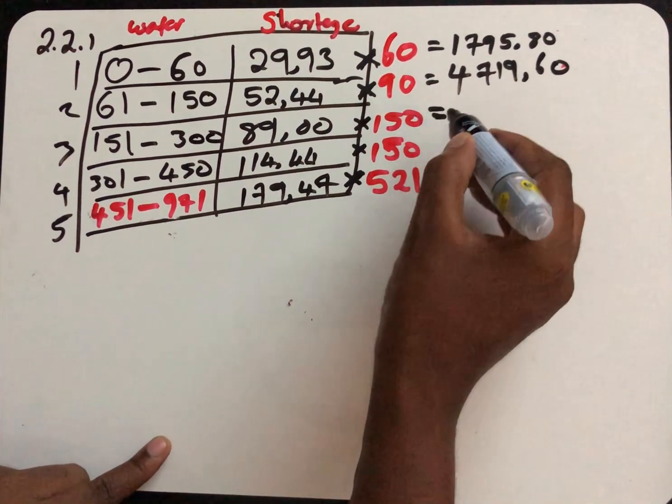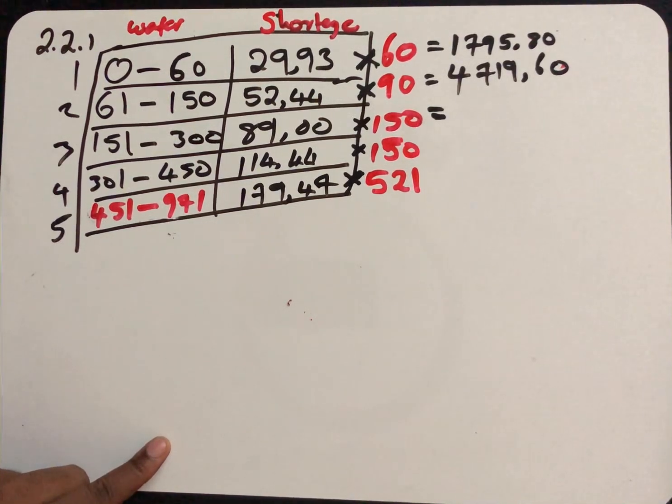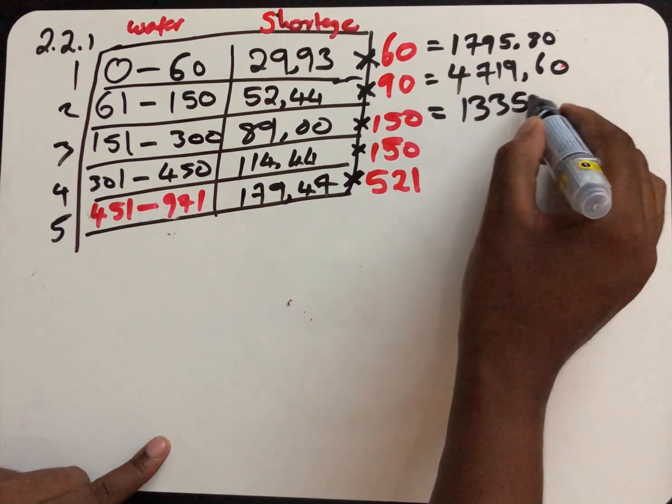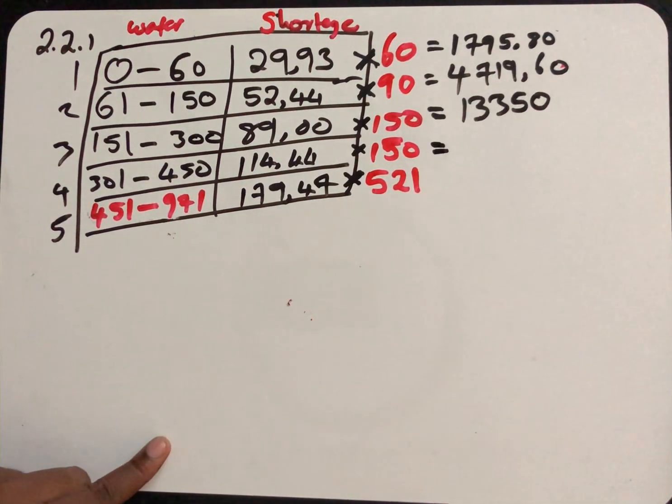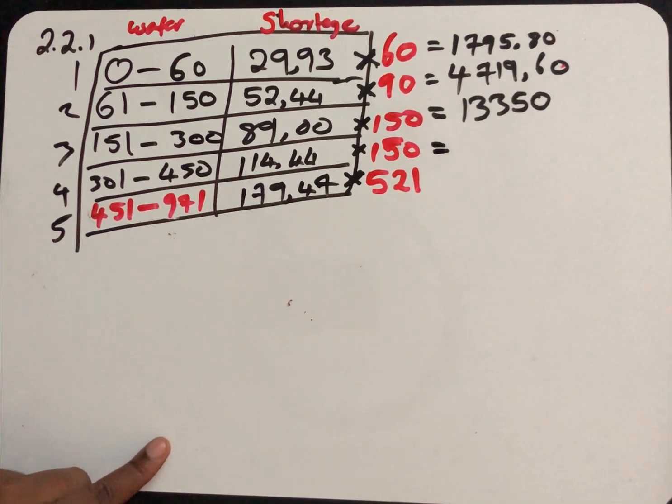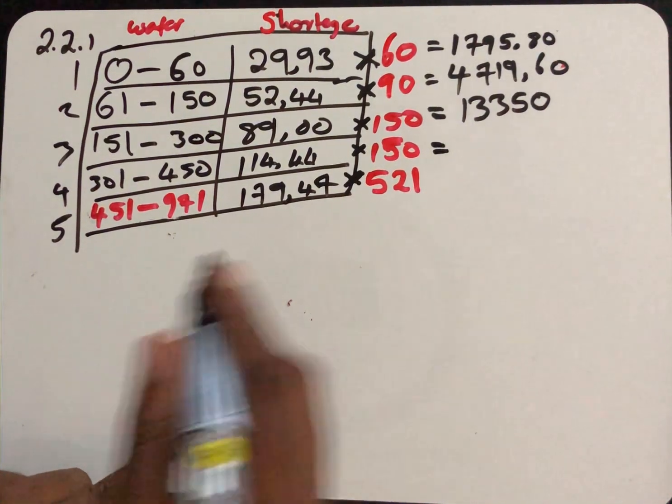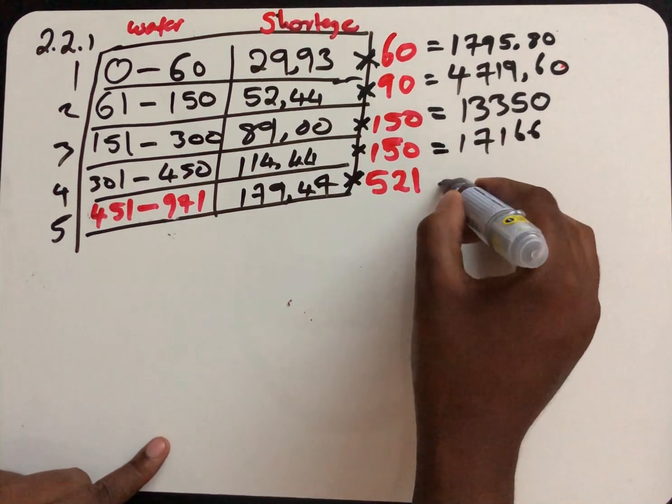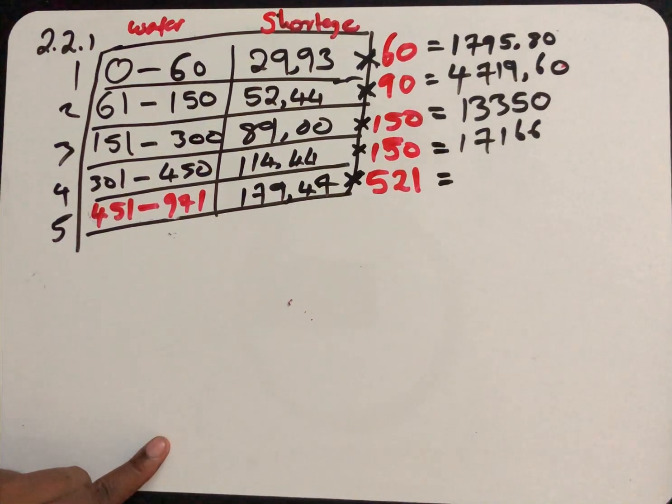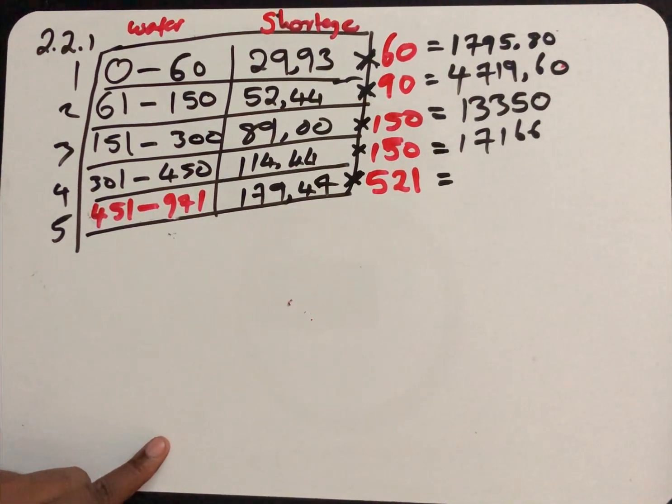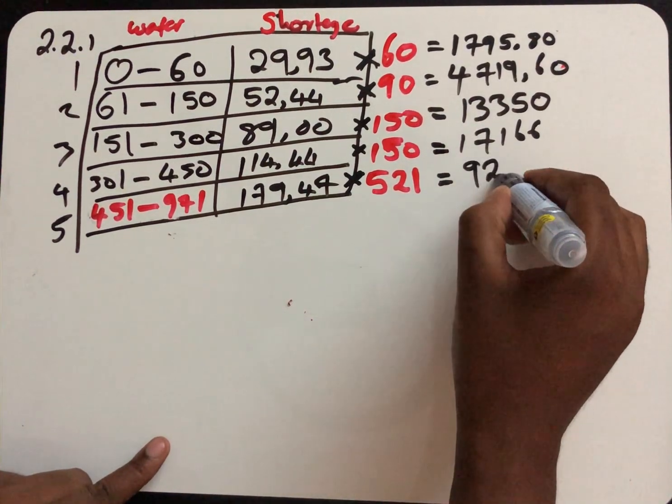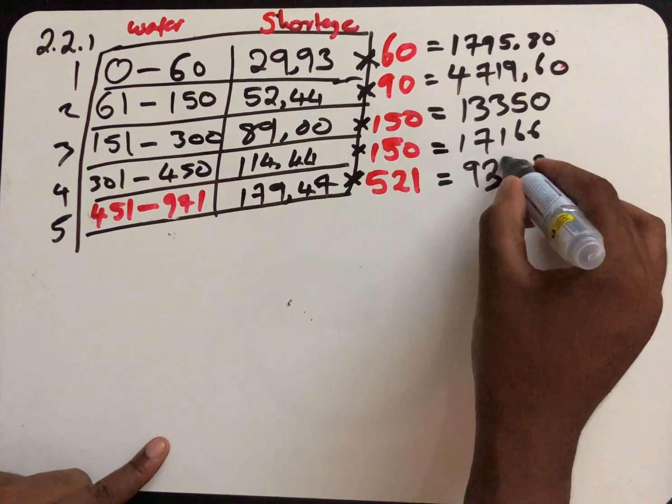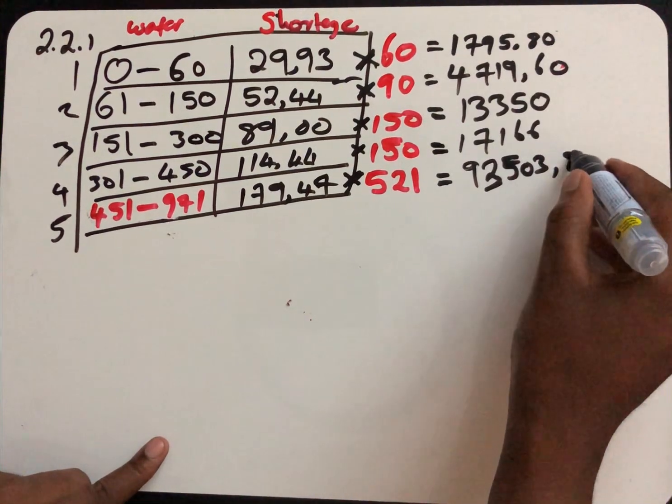And then, number three is 89.90 multiplied by 150, which is 13,350. The next one, 114.44 multiplied by 150, we found 17,166. The last one is going to be 179 multiplied by 522. We find our answer to be 93,503.87.